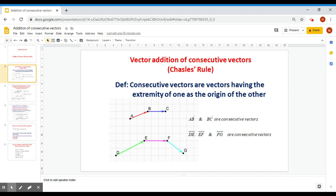But what are consecutive vectors? Consecutive vectors are vectors such that the extremity of one is the origin of the other. So in vector AB, the extremity is B. In vector BC, the origin is B.